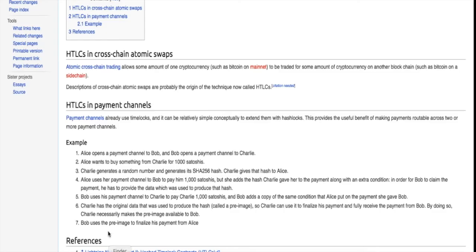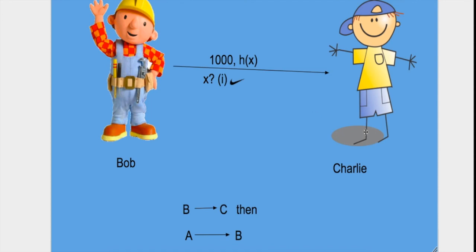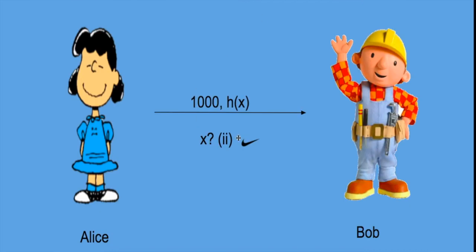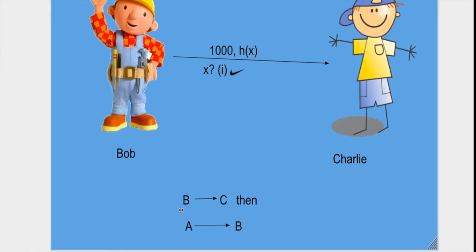Charlie has the original data that was used to produce the hash, so Charlie can use it to finalize his payment and fully receive the payment from Bob. By doing so, Charlie necessarily makes the pre-image available to Bob, and Bob uses the pre-image to finalize his payment from Alice. First, Bob gave 1000 satoshis to Charlie, and then he got his 1000 satoshis from Alice. This ensures that Bob is not able to run away with the fund of Alice by any chance.